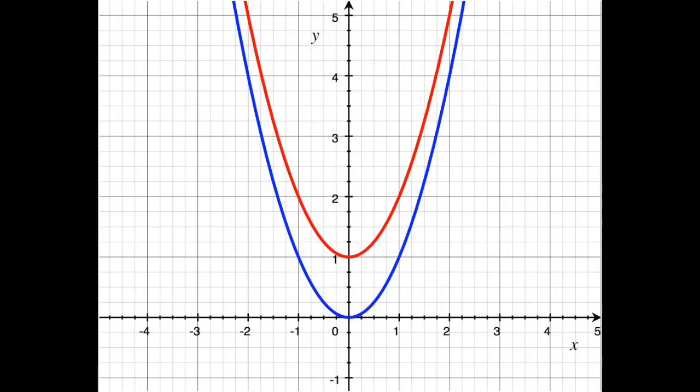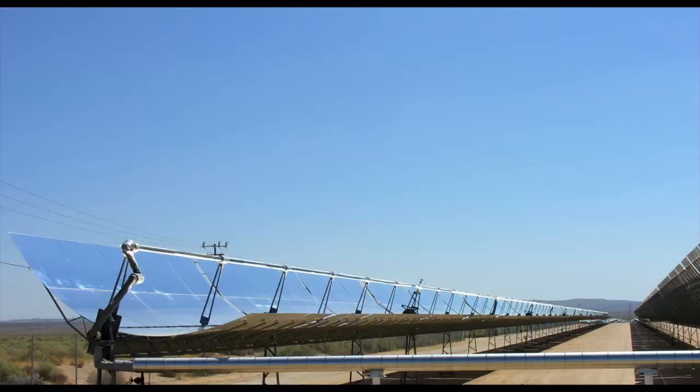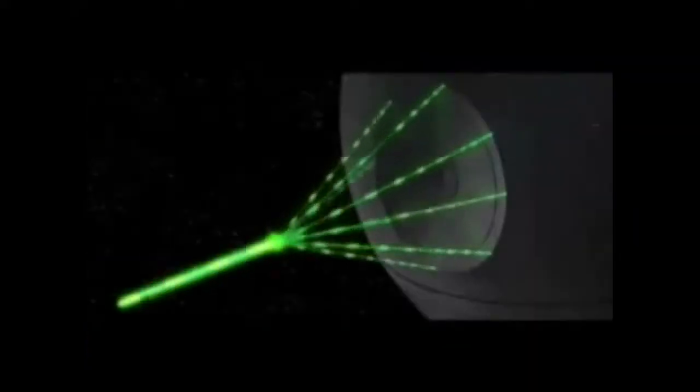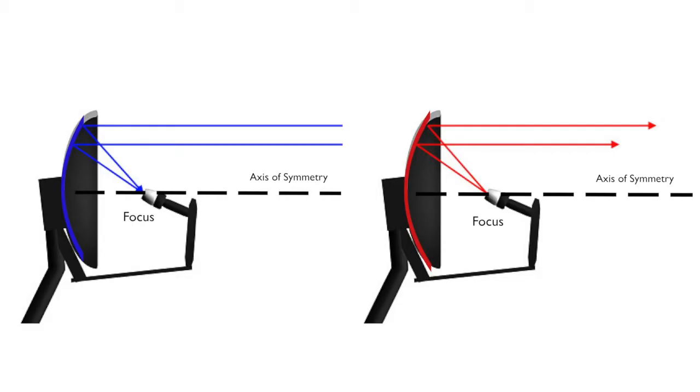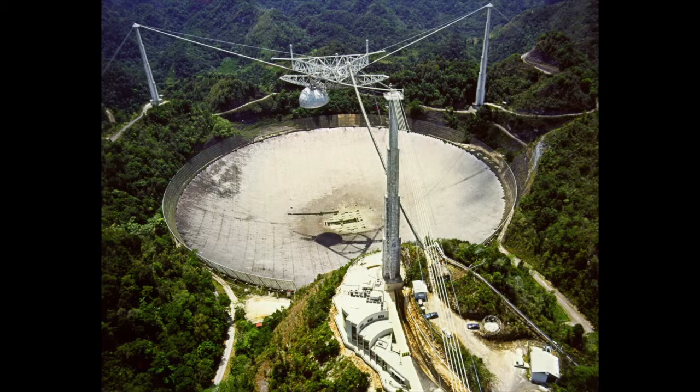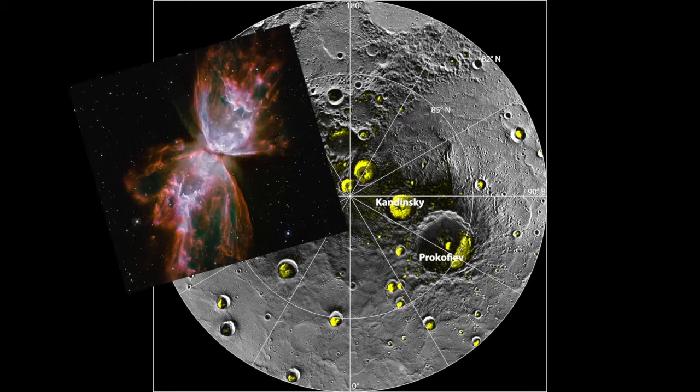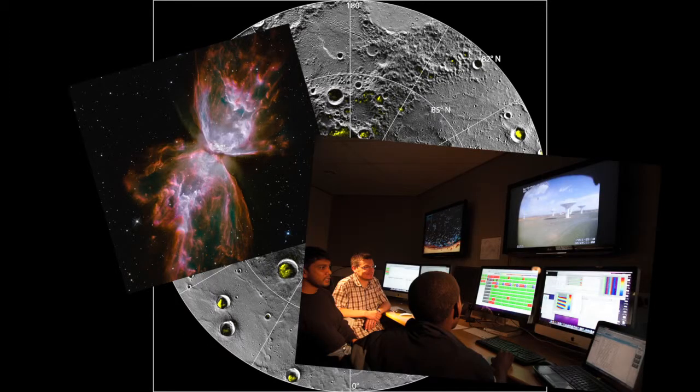Parabolas also have a perfect shape for focusing things like visible light, radio signals, and etc. Any ray parallel to the axis of symmetry is reflected to the focus of the parabola. Something as simple as a parabola is exactly what allows things like the giant Arecibo radio telescope to work, allowing it to focus radio emissions from distant galaxies so that astronomers can study them.